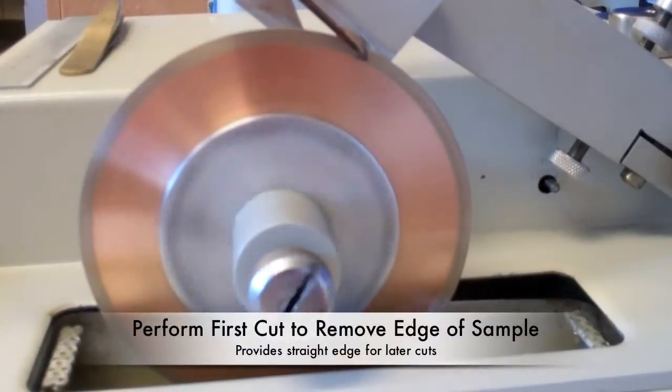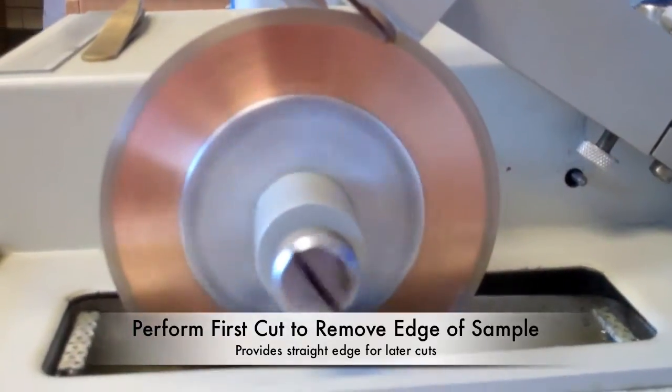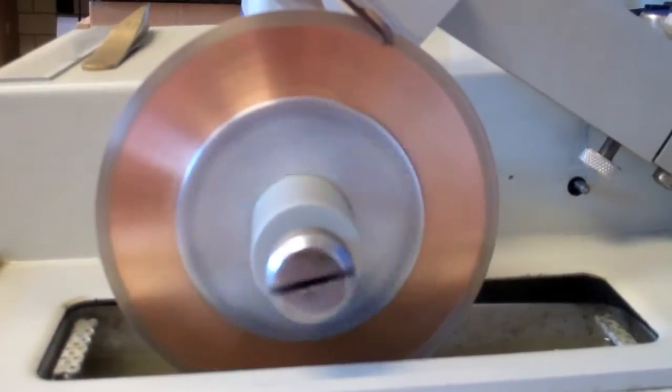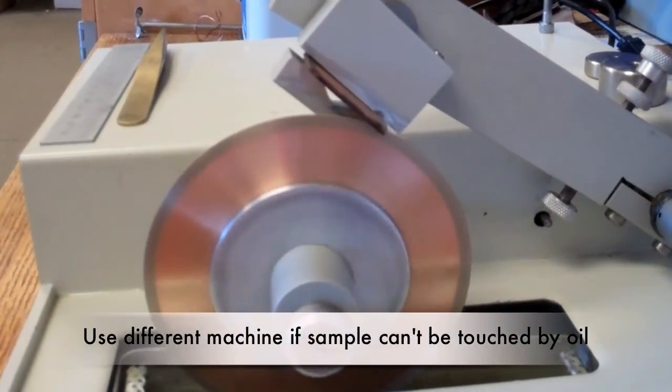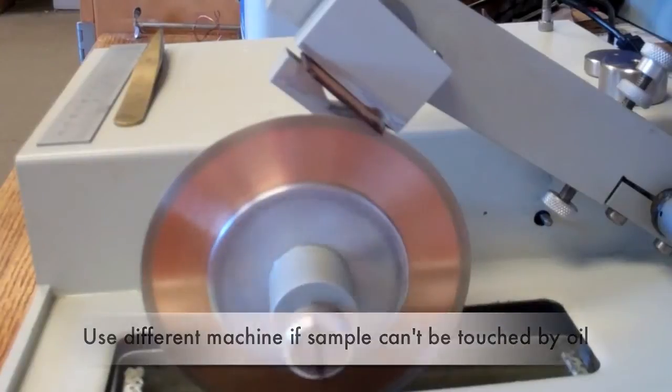First, the excess edge of the sample will be removed to create a straight edge for the successive cuts. During the cut, oil is lifted onto the blade of the sample. If your sample is not compatible with oil, a different instrument may need to be used.